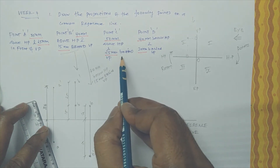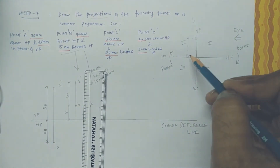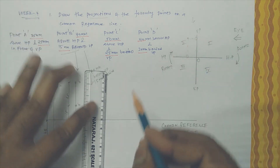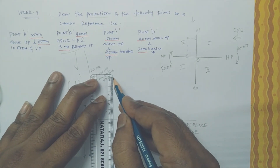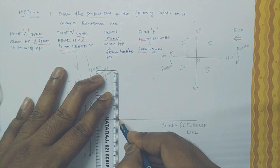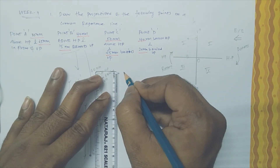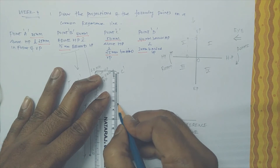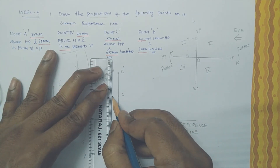Similarly, the third question — point C is in the second quadrant: 50mm above HP and 25mm behind VP. Behind VP on this side — when you are rotating it, it will show in the same line of action. I am marking 5 centimeters, which is 50mm. So C-dash is in the vertical plane, and here 25mm — this is C in the horizontal plane. We need to mark like that.